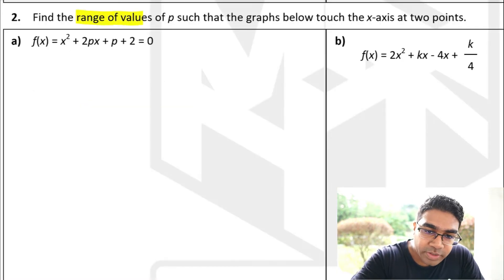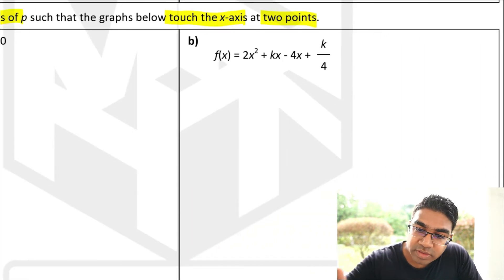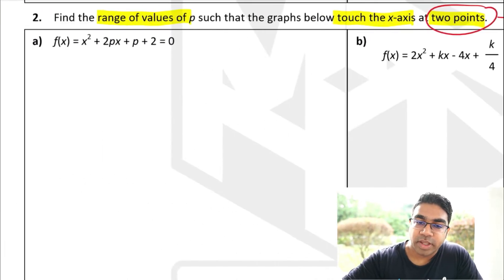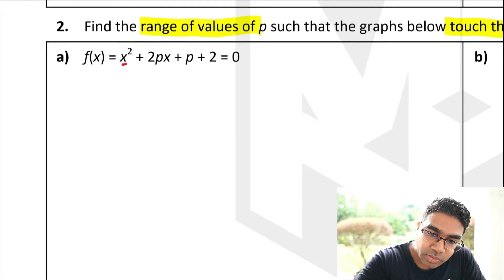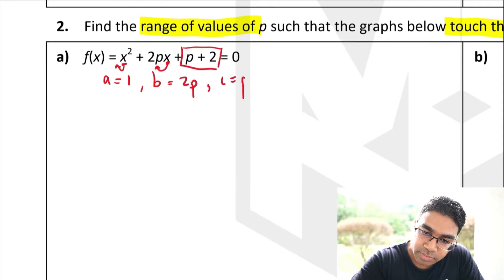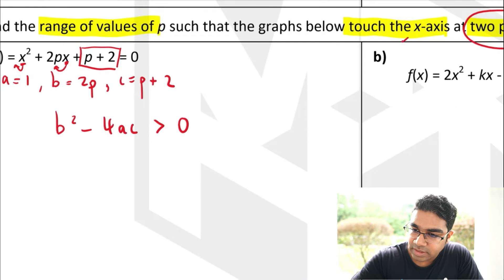Let's try some questions. Find the range of values of p such that the graph touches the x-axis at two points. Since it touches the x-axis at two points, the discriminant is positive: b² − 4ac > 0. Let's identify a, b, and c. a = 1, b = 2p, and c = p + 2. We use the condition that the discriminant is greater than zero since the graph touches the x-axis at two points.